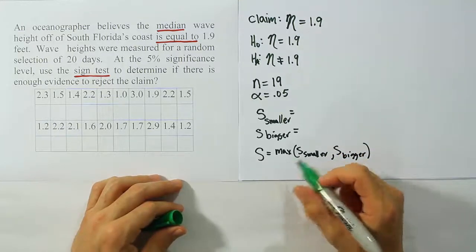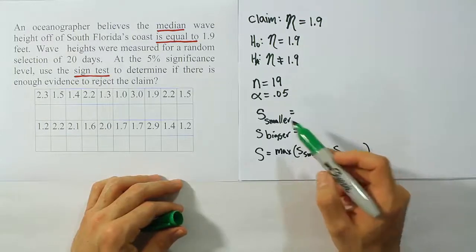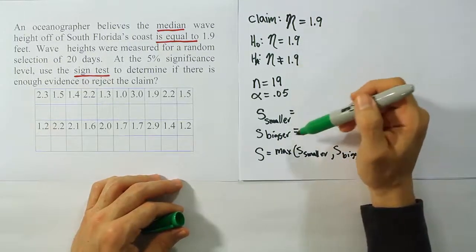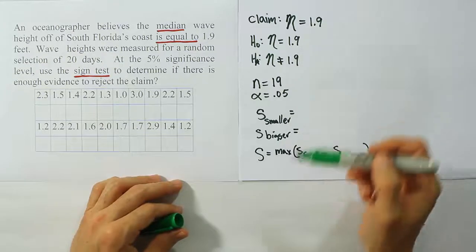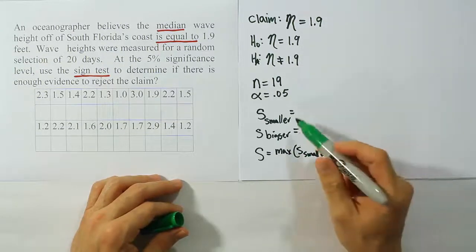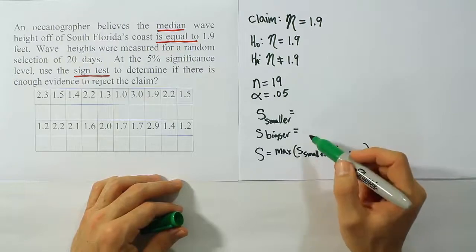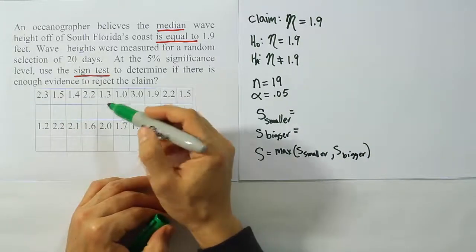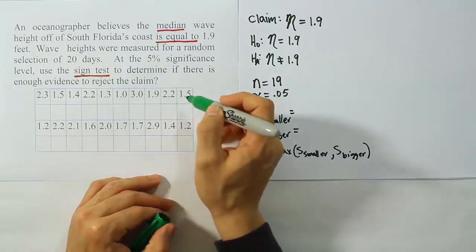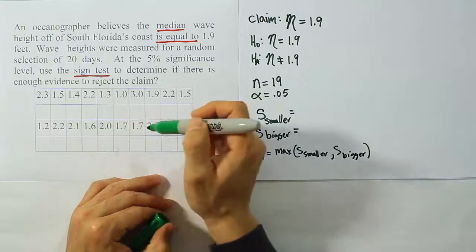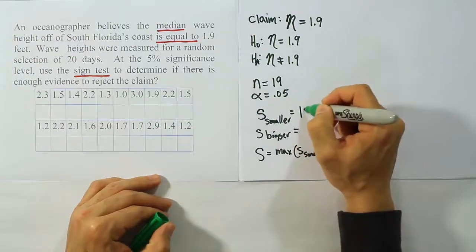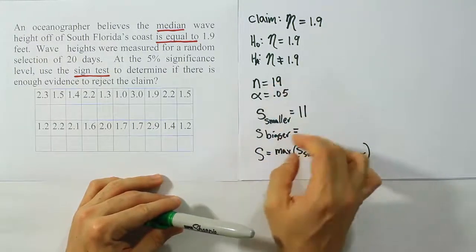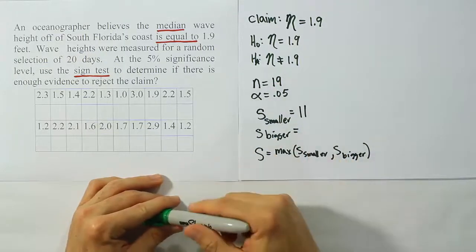Our test stat will eventually be S, which is going to be the maximum between S smaller and S bigger. What do I mean by the maximum? I mean the one that's larger between these two. Both of these are going to be numbers because they're just counts. How many values are smaller than this number 1.9? How many values are bigger than 1.9? And then what we're going to have afterwards is the maximum between those two numbers. So let's count up how many values are smaller than 1.9. I see 1, 2, 3, 4, 5, 6, 7, 8, 9, 10, 11. I count 11 numbers smaller.